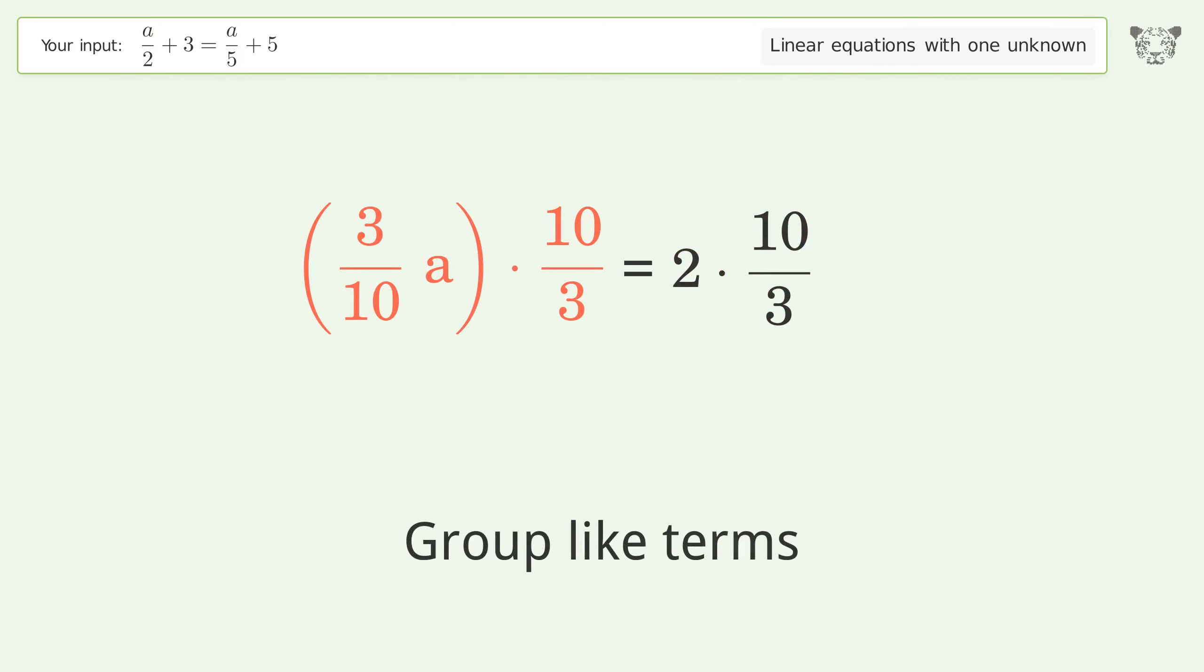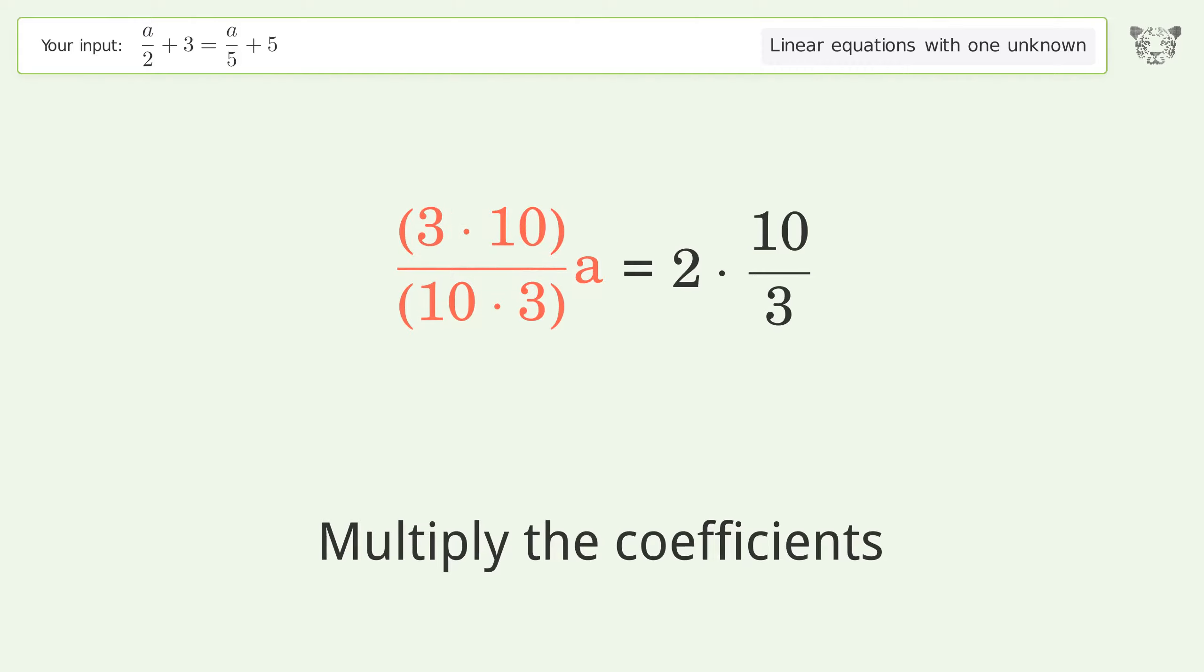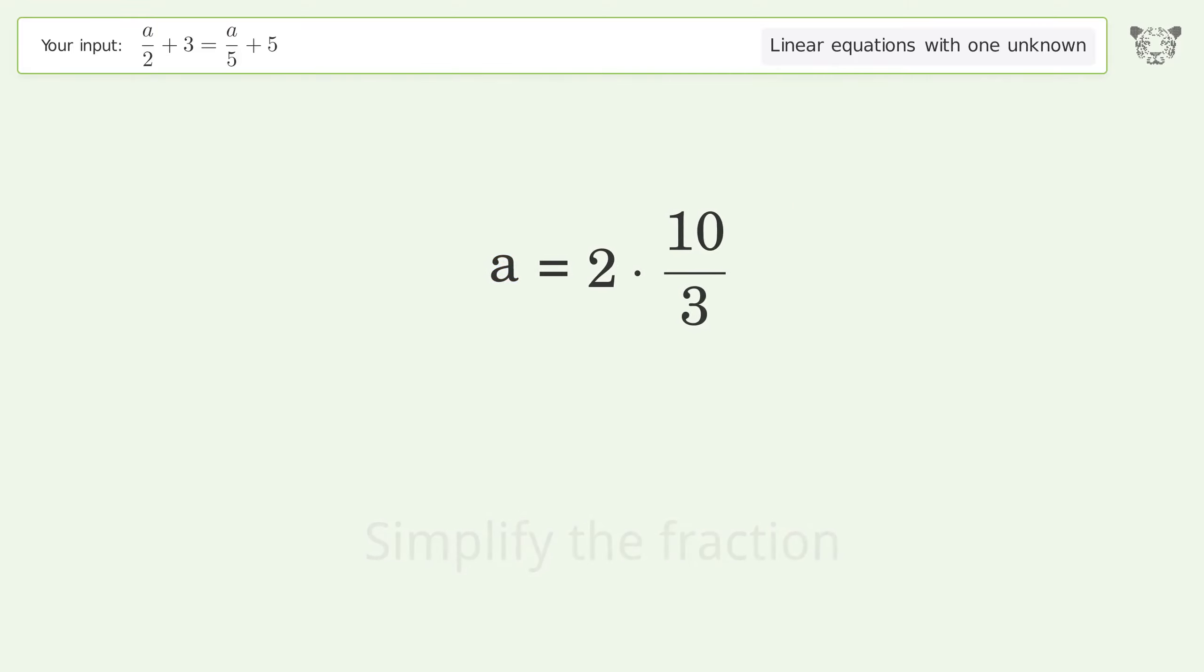Group like terms. Multiply the coefficients. Multiply the coefficients, simplify the fraction. Multiply the fractions. Simplify the arithmetic. And so the final result is a equals 20 over 3.